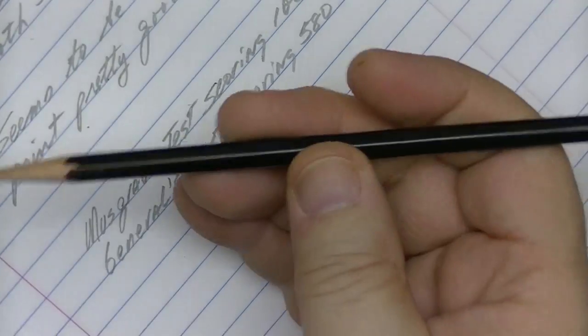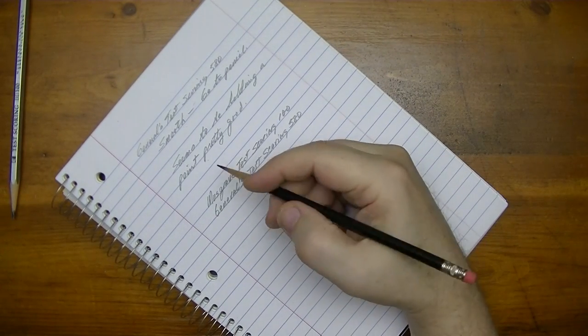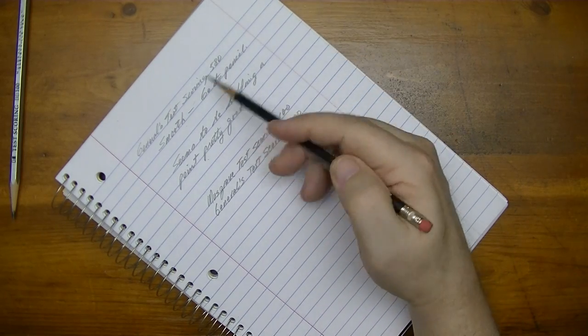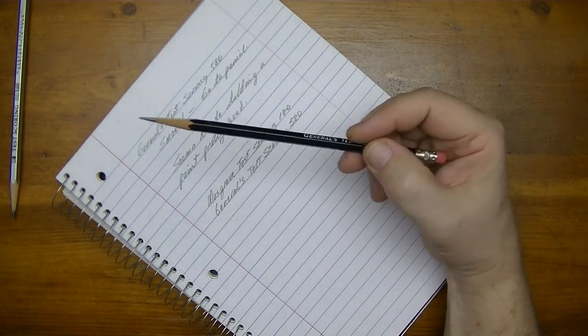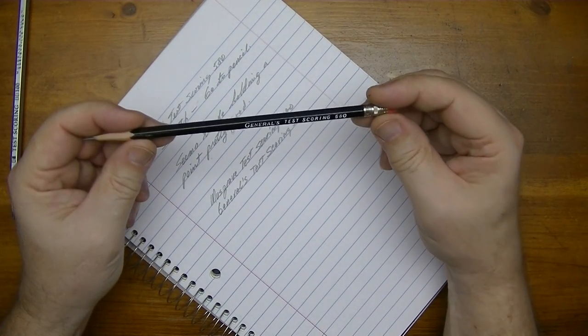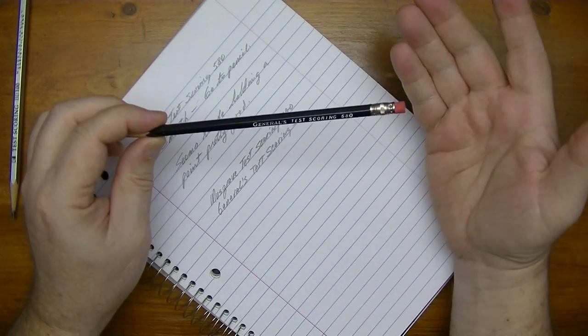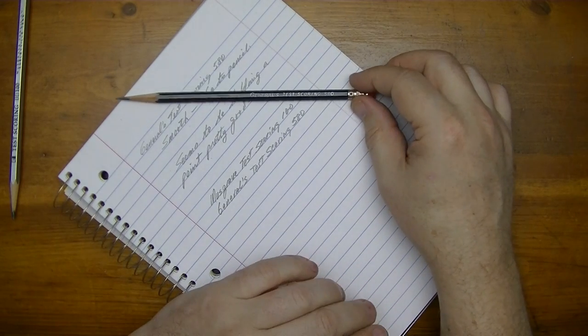But if you don't want to sharpen as much as you would with this, then the General's Test Scoring 580 would be the better pencil. And if you're especially, if you're just going to do short notes, sharpening is not a big deal. But if you're going to write lots of notes, like long pages of notes, you may be one of those who don't want to keep sharpening their pencil every four or five sentences. And so, you know, you want to definitely pick your pencil based on that.